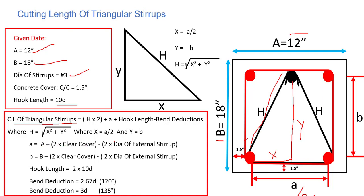For small a, we deduct concrete cover from both ends from large A, minus 2 times the dia of the external stirrup. For b, we deduct clear cover from both ends from large B, minus the dia of the external stirrup. Hook length is 2×10d because we have two hooks.